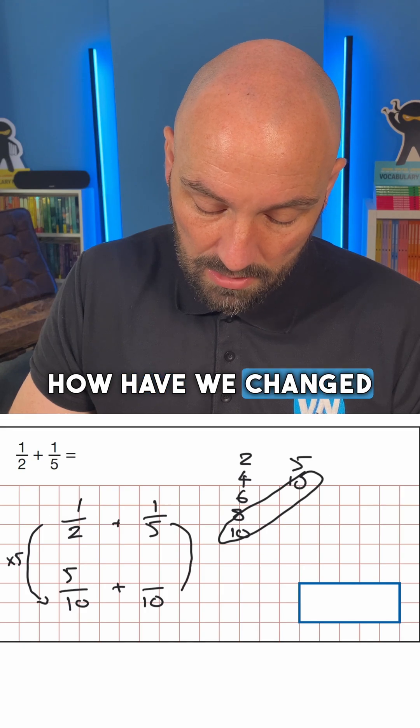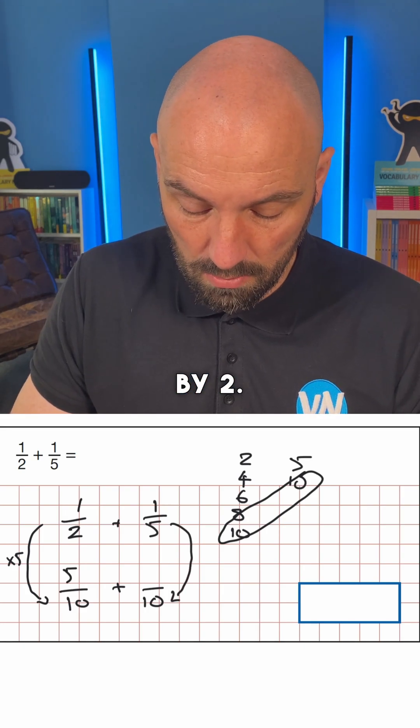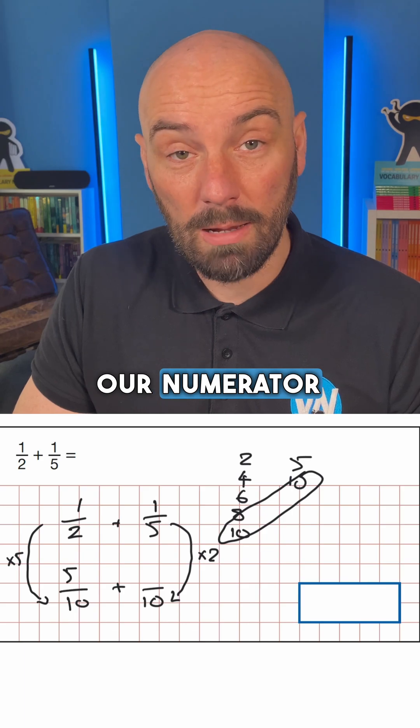How have we changed 5 to 10? We've multiplied by 2. So we would multiply our numerator by 2.